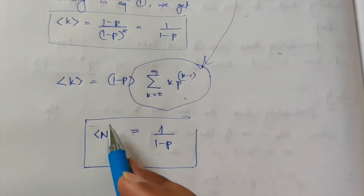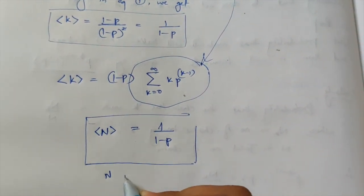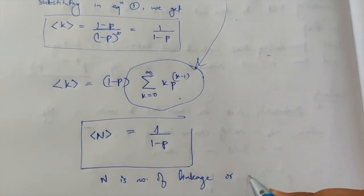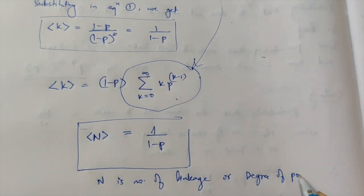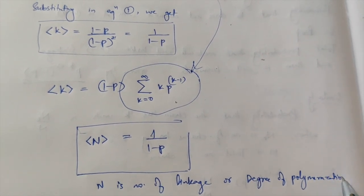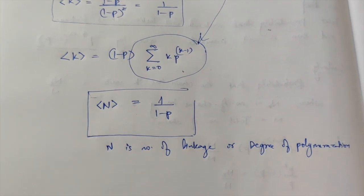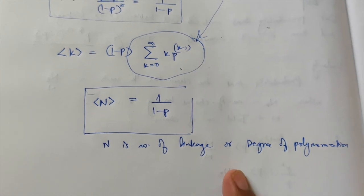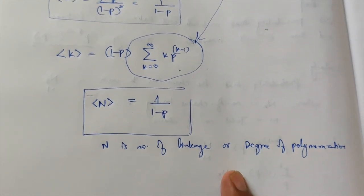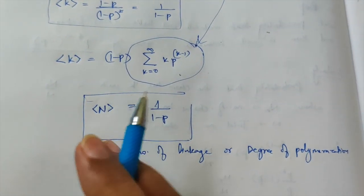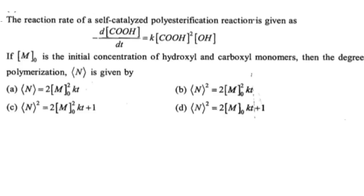So N, which is the degree of polymerization, equals one over (1 minus P), where P is the fraction of monomer consumed or the probability of formation of the polymer. That's how we derive this formula, and the answer to the question is option number A.